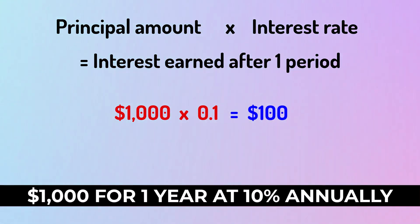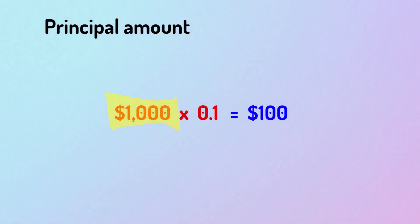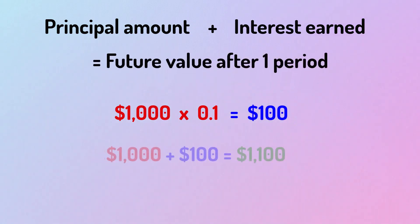Therefore, by the end of the year, you will have earned $100. Furthermore, if we combine the principal investment of 1,000 with the interest earned, the future value after one year is $1,100.